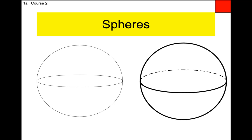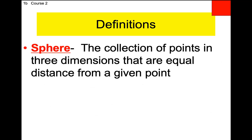Now you know how the sphere will be depicted for homework and whatnot. Occasionally they will put some shading to help you see that it's not a circle, that it's a sphere. I find the shading sometimes gets in the way and makes it hard to read. Write this down — box 1B. Here's your definition: it's the same as the definition of the circle, except it's not on a flat surface. It's the collection of points in three dimensions that are the same distance away from a given point.